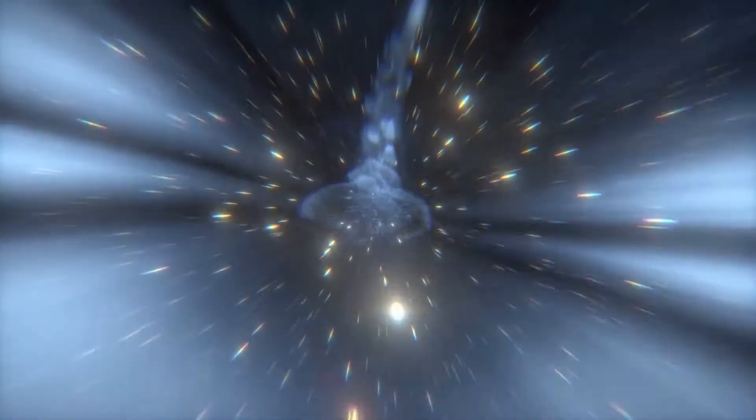Mercury rotates in a way that is unique in the solar system. It is tidally locked with the Sun in a three-against-two spin-orbit resonance, meaning that relative to the fixed stars, it rotates on its axis exactly three times for every two revolutions it makes around the Sun.